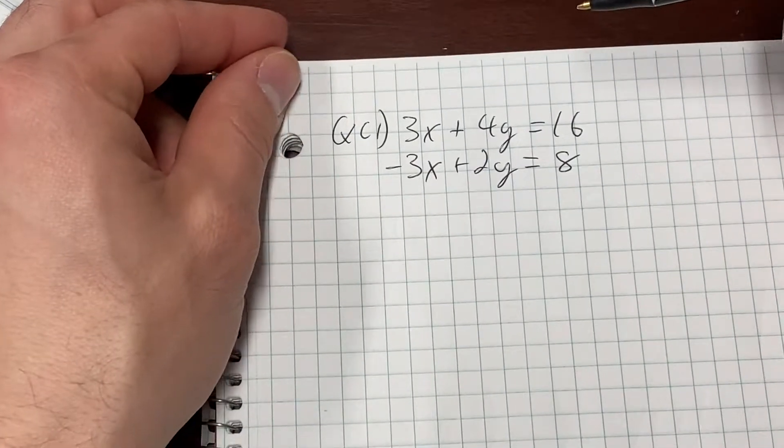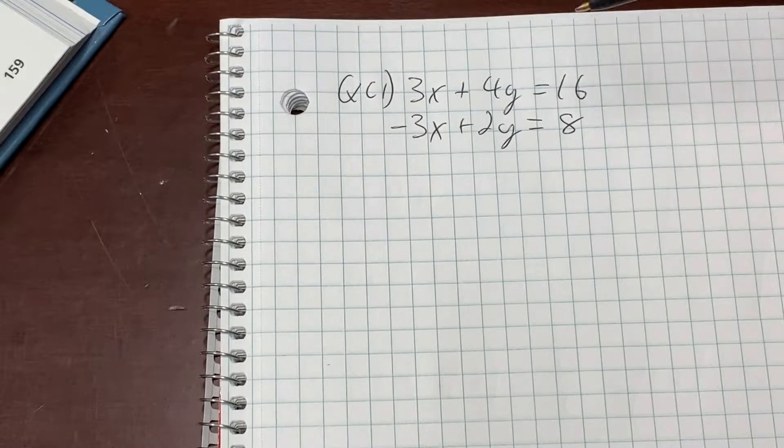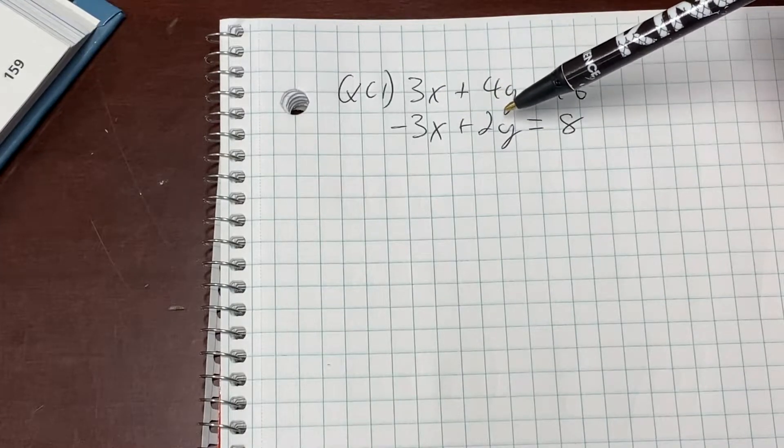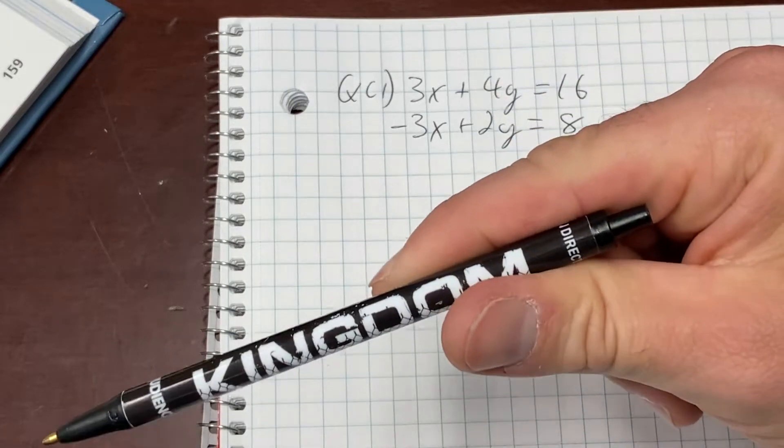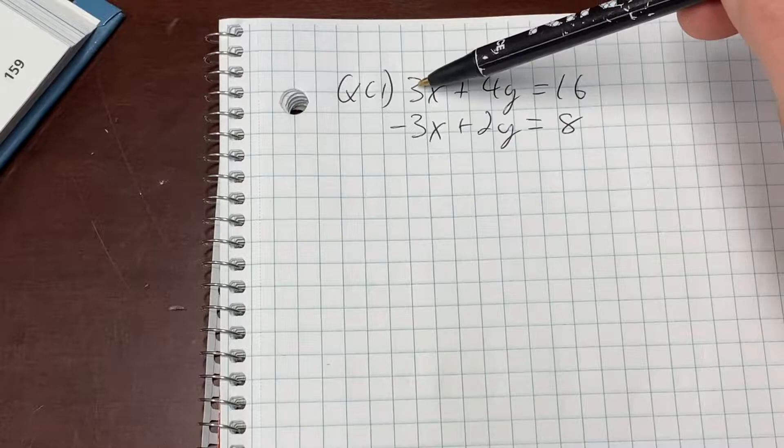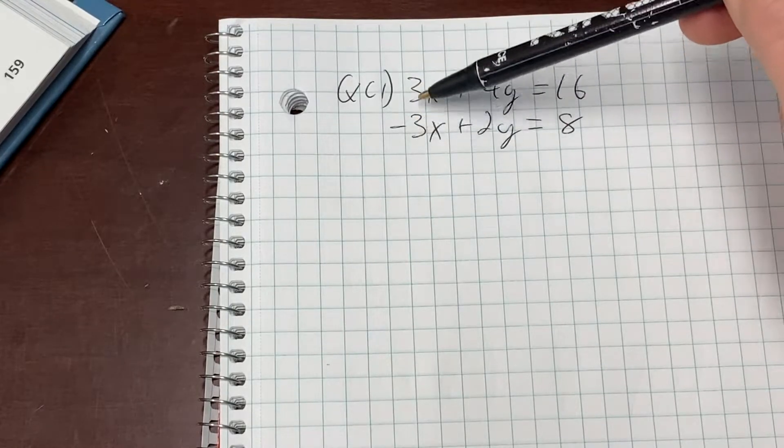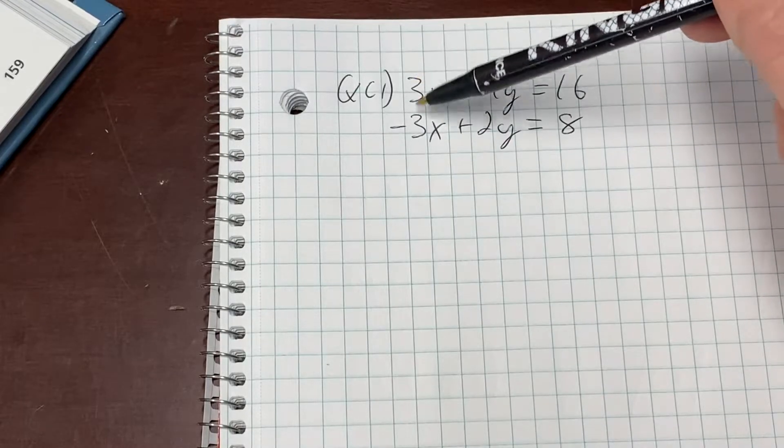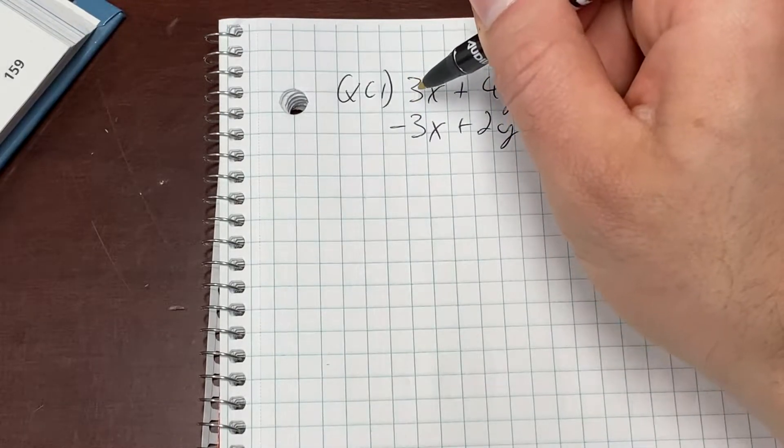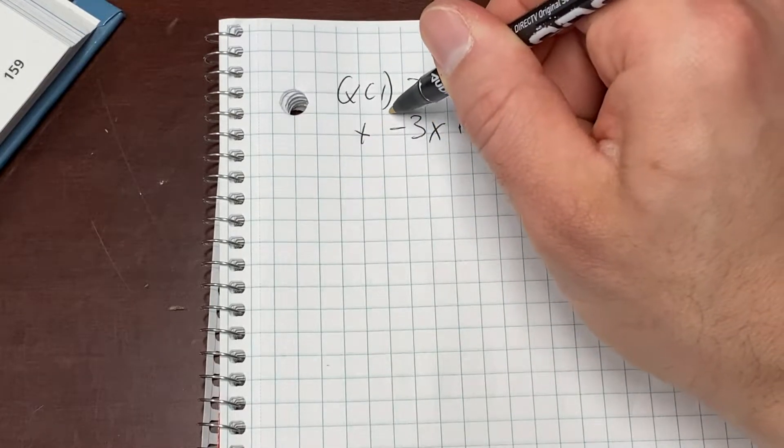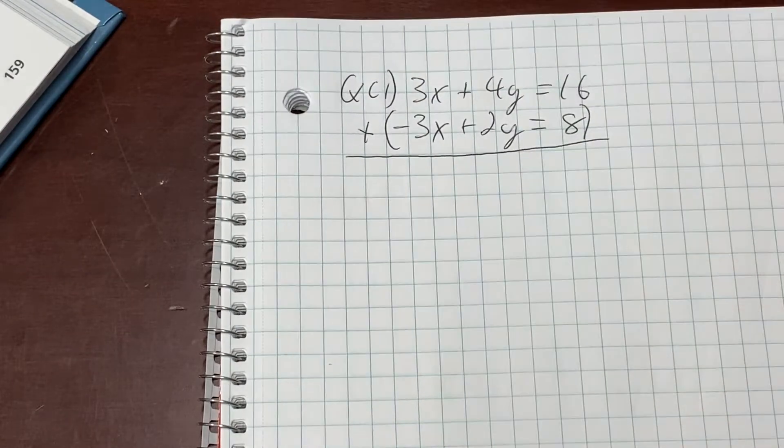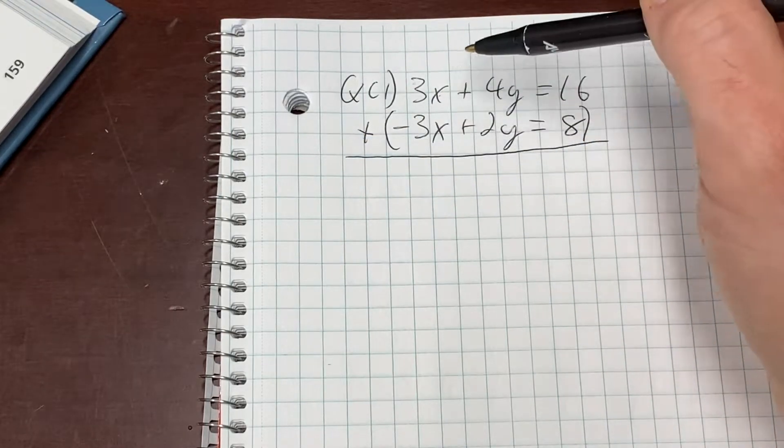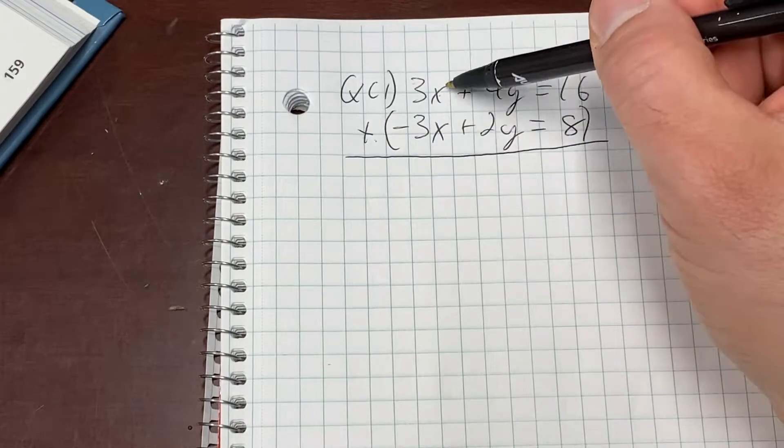Here's the system we're going to solve using elimination, and I'm going to show you every single step. We have to eliminate either the X variable or the Y variable. We have to look and see which one has the same number in front. Do the Y's have the same number in front like they did in the book? No, four and two are not the same. But our X's, they both have a three. One's positive, one's negative. That doesn't matter. All we care about is that the number is the same. If they're opposites like this, we eliminate by adding.